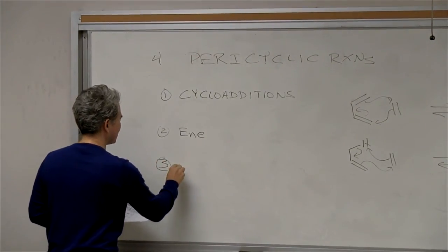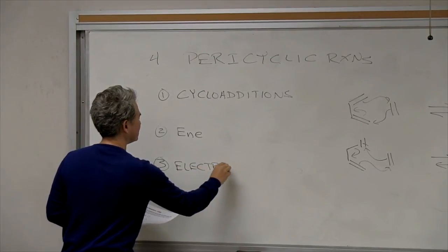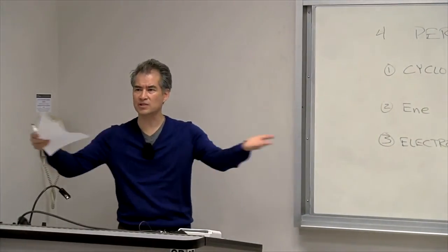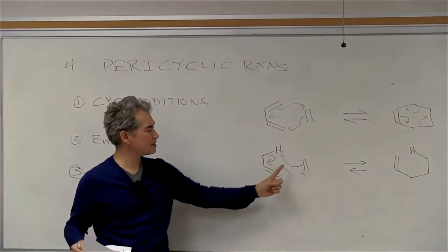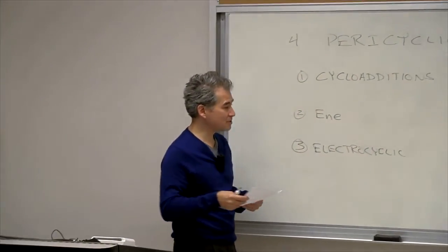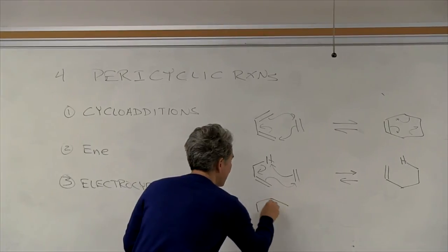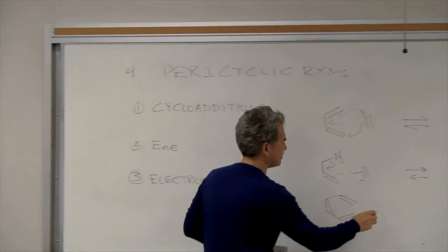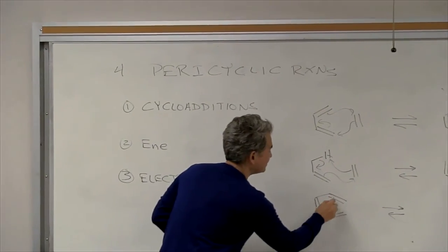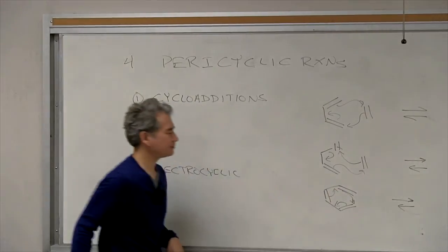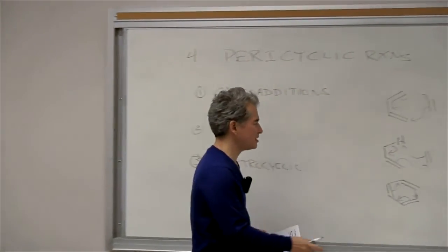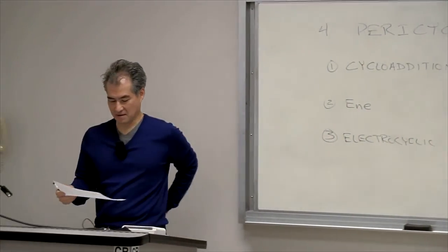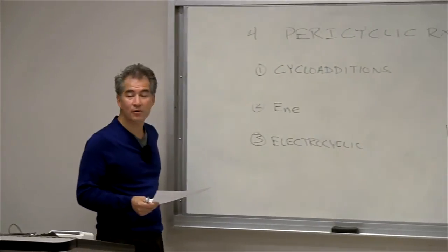The next class of pericyclic reactions are called electrocyclic reactions. In the cycloaddition and ene reactions, two components come together. In an electrocyclic reaction, it's all unimolecular. Here's a canonical electrocyclic reaction — it looks kind of like a six-membered ring process. I start with an open system and end with a closed ring. You can push the arrows in the backwards direction for the retro version — an electrocyclic ring opening.